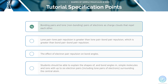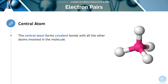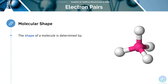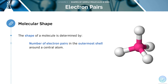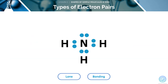First, we will look at bonding pairs and lone pairs. The central atom is the atom that every other atom is bonded to. This will form covalent bonds with all the other atoms involved in the molecule. Here, the central atom has been shown in pink. The shape of the molecule is determined by the number of electron pairs in the outermost shell around the central atom. Here, we can see the four electron pairs of nitrogen in ammonia, NH3.